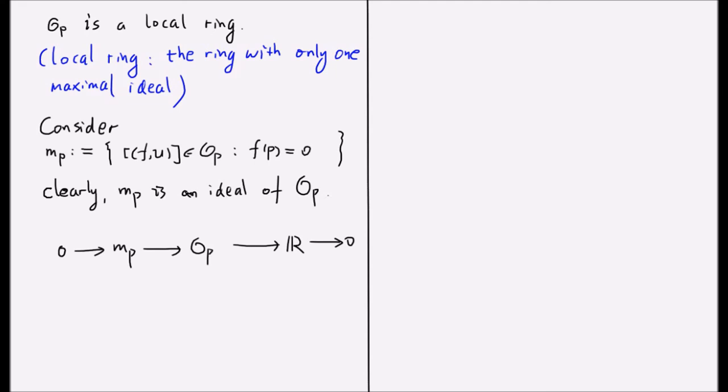Where the second map is an inclusion. And the third map is an evaluation map sending a function in the germ to its value at p. So it follows immediately that O_p modulo M_p is isomorphic to ℝ, which is a field. So M_p is a maximal ideal.